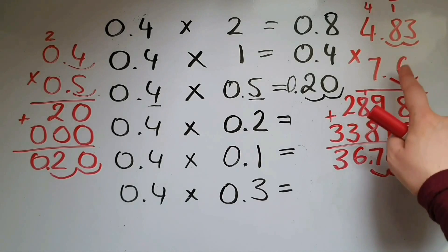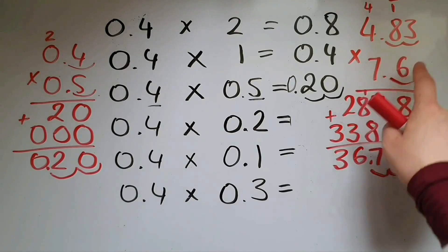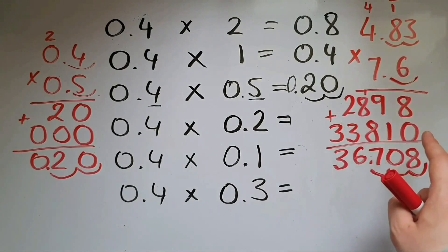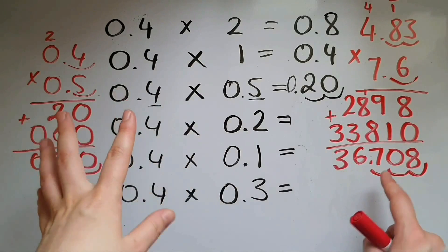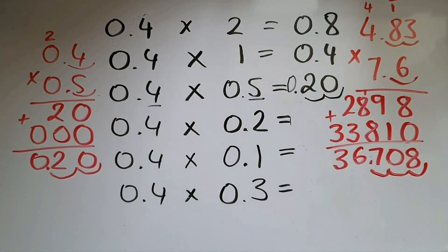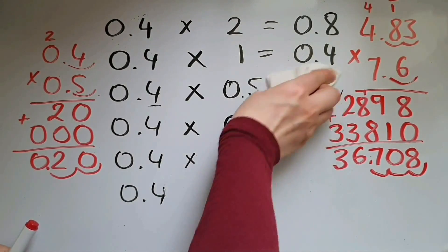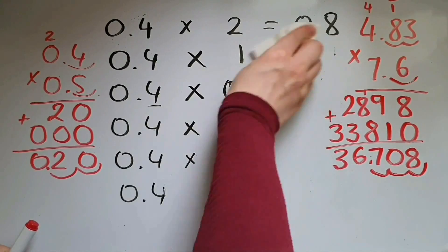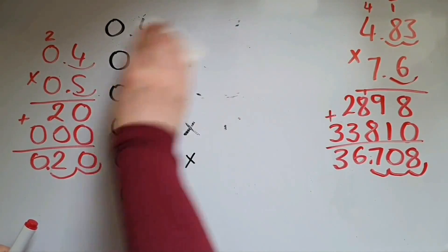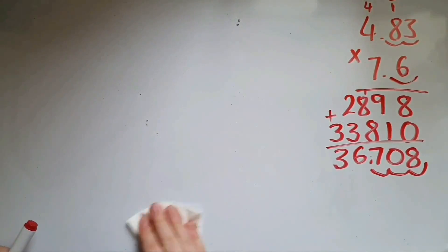When it comes to numbers like these that have more decimal places and haven't got zeros, it's advisable to use this long method. Or you can use another method, which is the lattice method, and I'll use the same numbers to go through that.